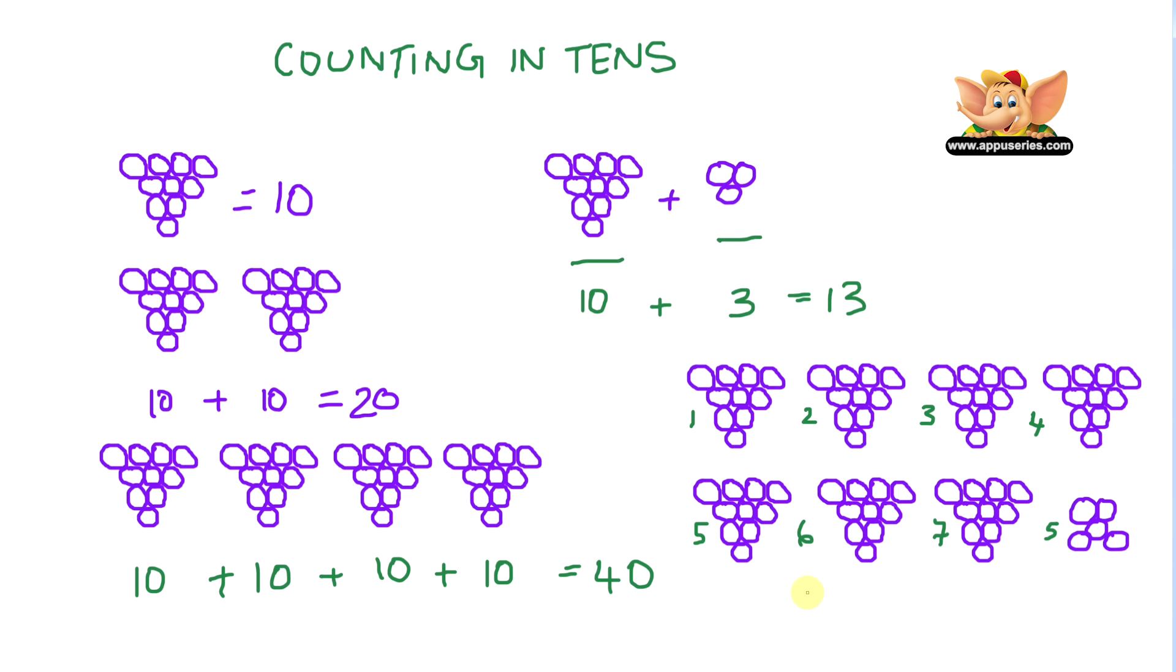Seven groups of ten grapes each. What does that make it? That's seventy. So seventy plus five single ones equals seventy-five.